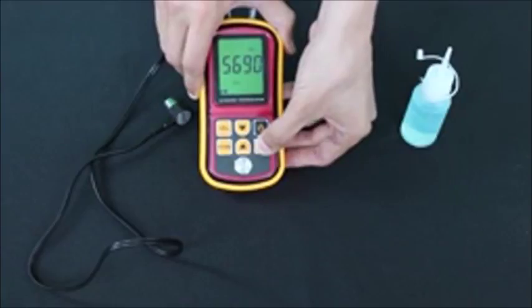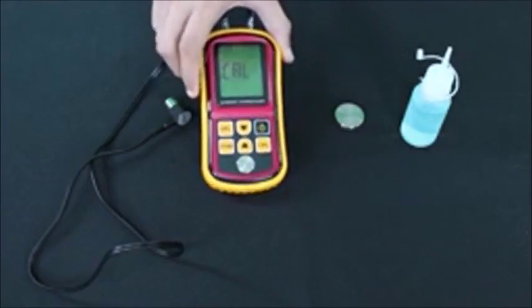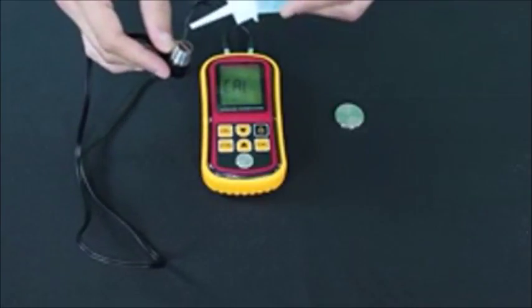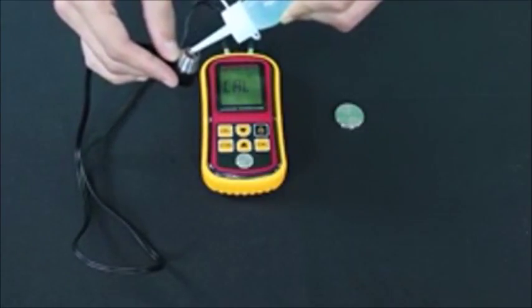The thickness gauge we offer on DLAT.com has a really cool feature: auto calibration. Auto calibration ensures that you're going to get the right reading every time you use the tool. I'll show you how it's done.